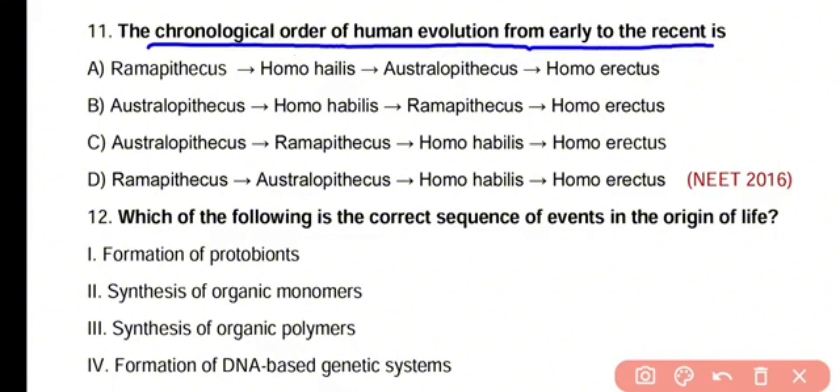Question number 11. The chronological order of human evolution from early to recent — the options are: Ramapithecus, Homo habilis, Australopithecus, and Homo erectus; or Australopithecus, Homo habilis, Ramapithecus, and Homo erectus; or Australopithecus, Ramapithecus, Homo habilis, and Homo erectus. The correct answer is option D.